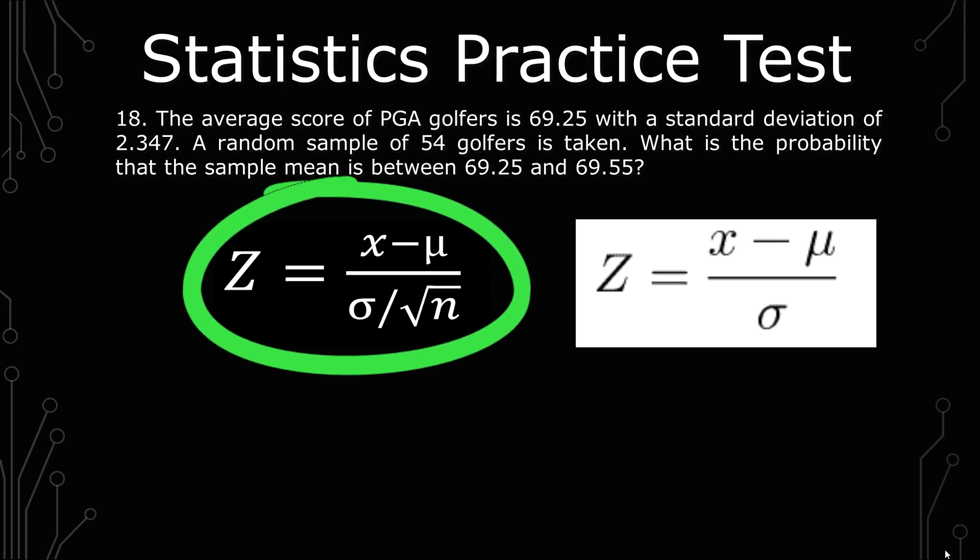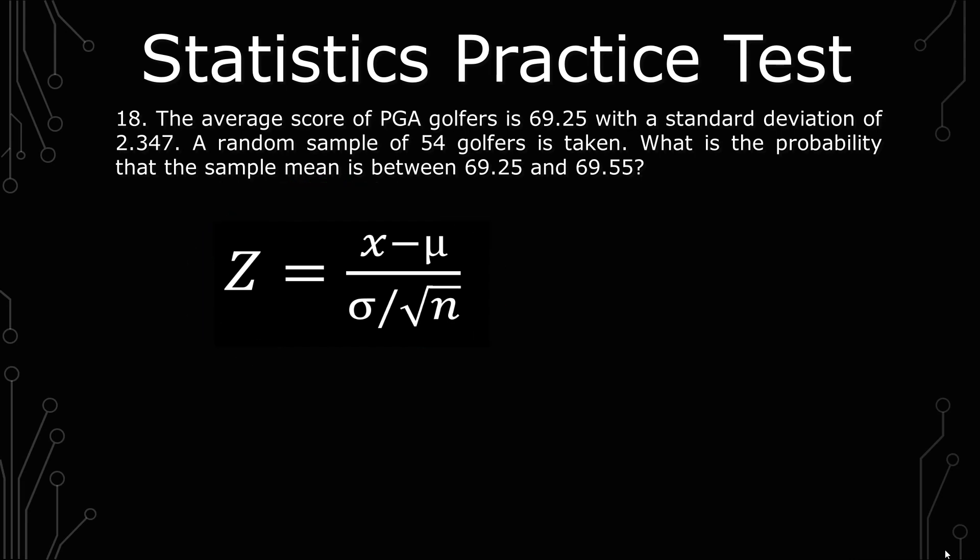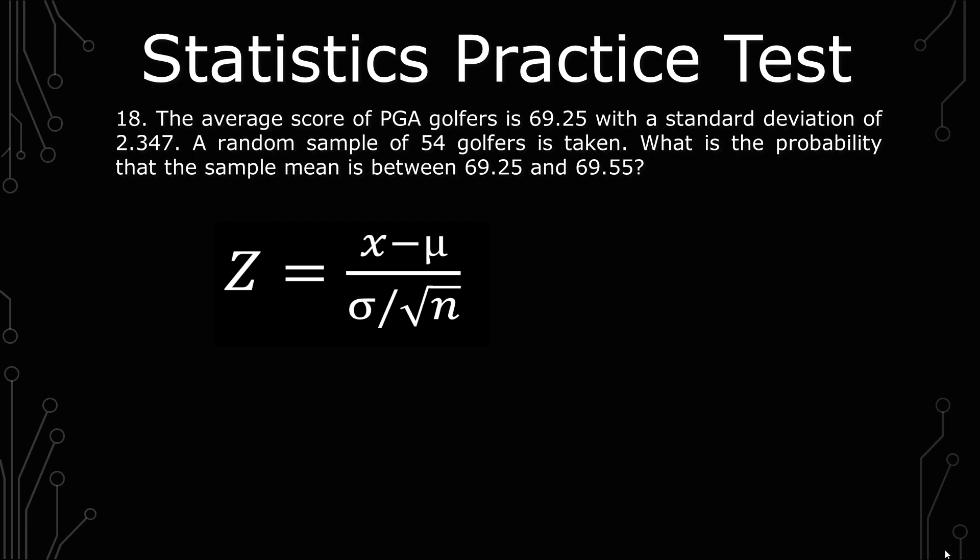If we're not given a sample, you just do a regular z-score. The formula is x minus mu, which is the average, divided by sigma, the standard deviation, which is also divided by the square root of n.